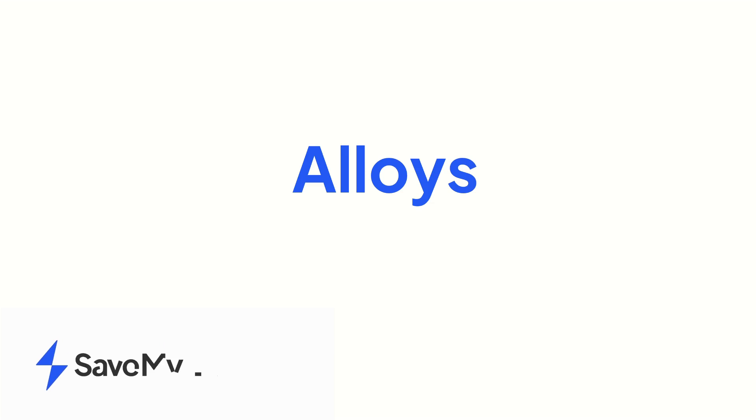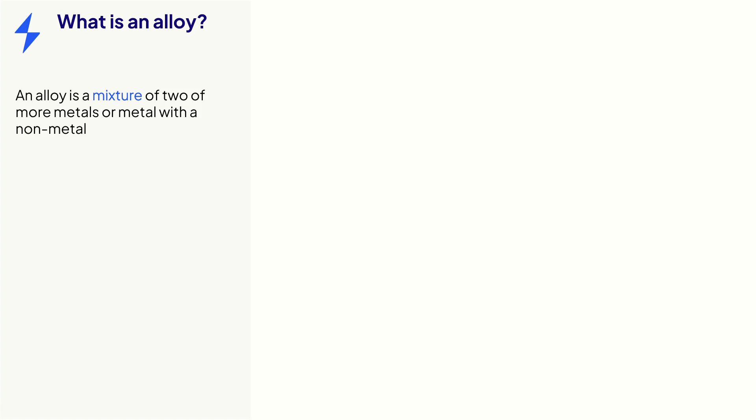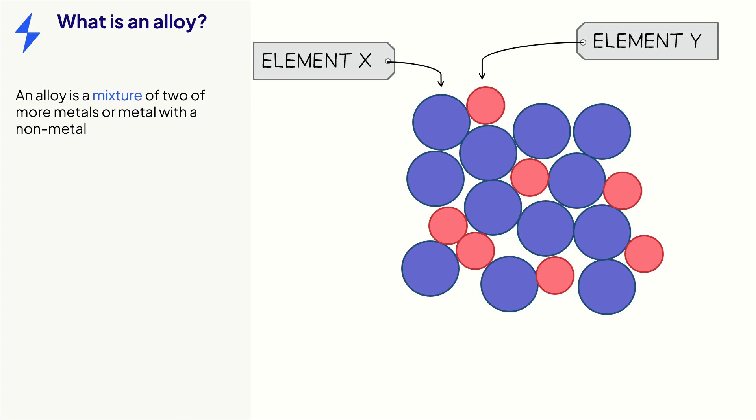In this video, we will be looking at the topic of alloys. An alloy is a mixture of two or more metals, or metal with a non-metal. At least one of the elements must be a metal.